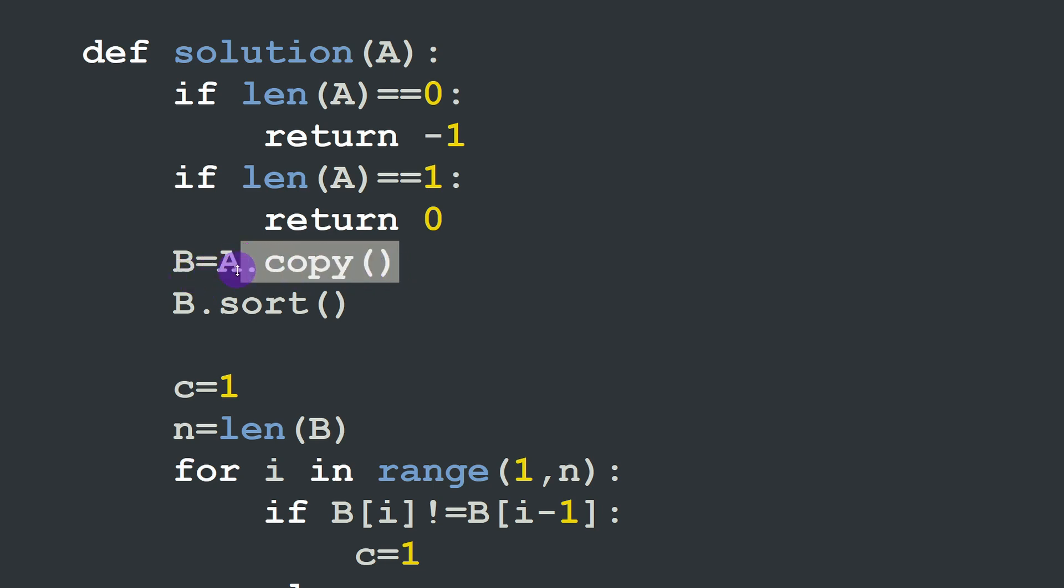So B equals A.copy. Then we can sort B using the sort function. We define C, the counter of occurrences, which is equal to one at the beginning. Then the size of B, which is the length of B, is the variable n. We are going to scan all the elements of B starting from the second element, meaning from one to n, just because we are testing the elements B[i] and B[i-1].